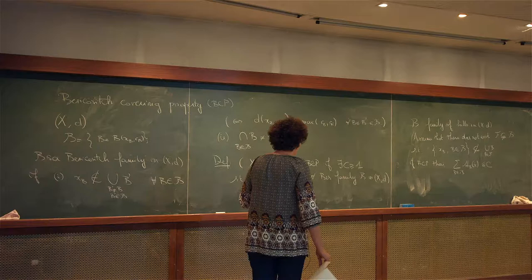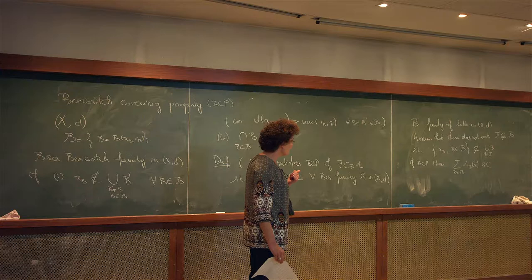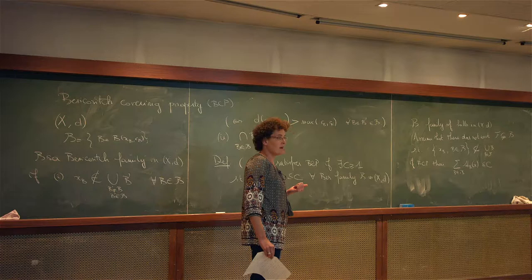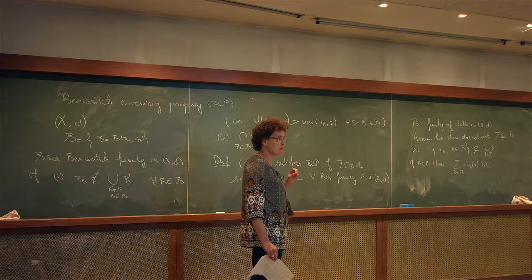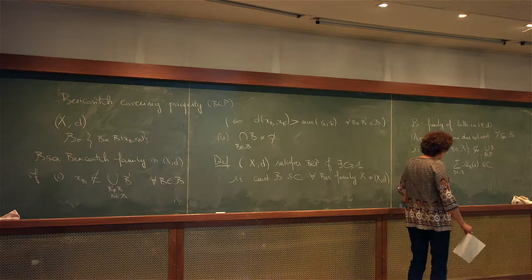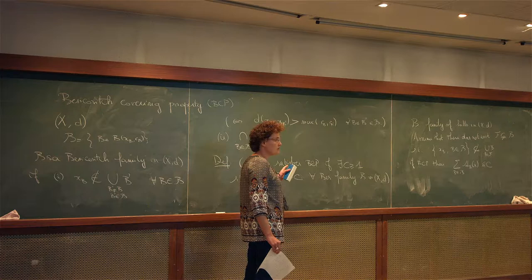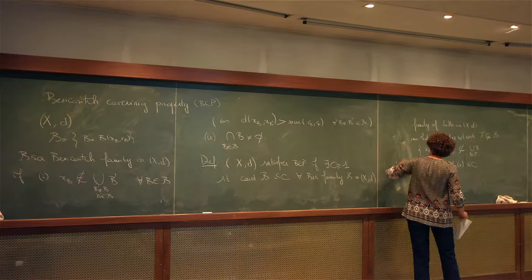Why is this useful? This property is named after Besicovitch because it was the property that Besicovitch proved for Euclidean space, and it was one of the main arguments in the proof of the differentiation theorem for measures in the Euclidean plane. Now this has been extended, and the fact that BCP is a powerful tool for differentiation of measures has been generalized to the general metric setting.